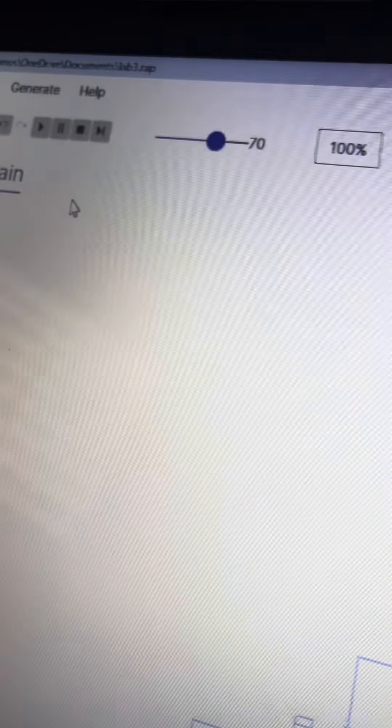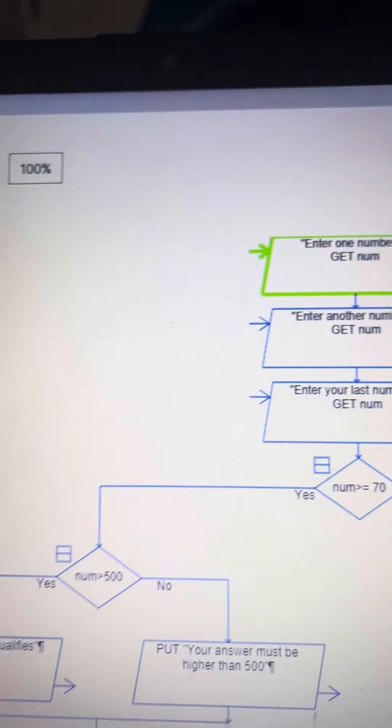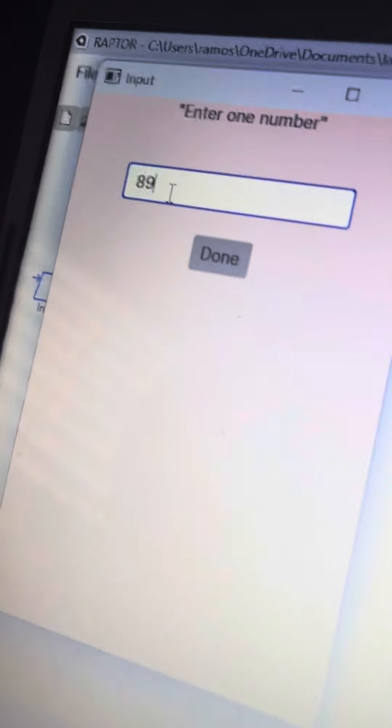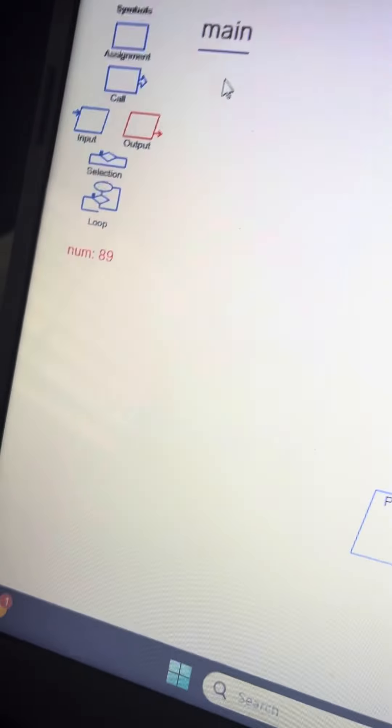So like any code, you're going to click play. Let me put 89. Done, it'll show up on your left right there.